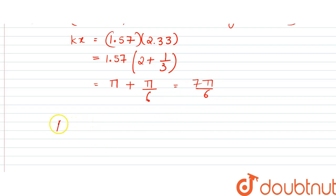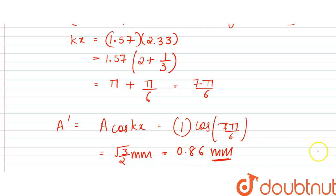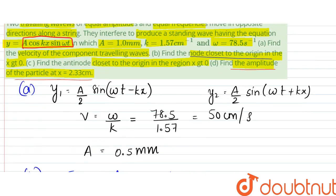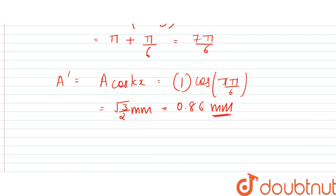So that gives the amplitude, that is, A' would be equal to A cos kx, which is equal to 1 millimeter into cos of 7π by 6. So, this turns out to be equal to root 3 by 2 millimeter, which is nothing but 0.86 millimeter. This is the amplitude. These are the answers for this question. Thank you.